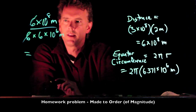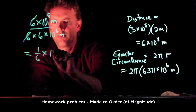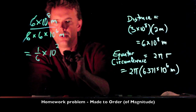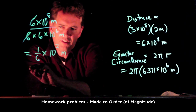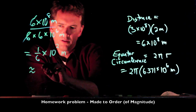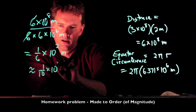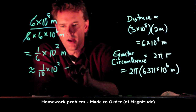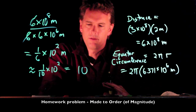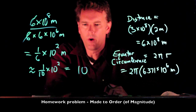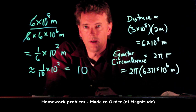Now we can cancel some stuff out — one of those sixes cancels out right there. We get 1 over 6 times 10 to the 2. One over six is pretty close to one over ten, so you end up with ten. Everybody in the U.S. joined hands — they'd go around the equator roughly ten times.